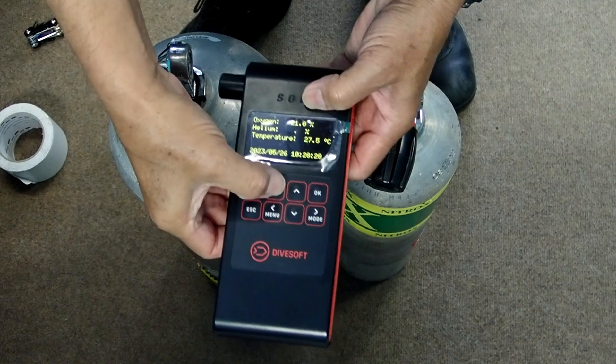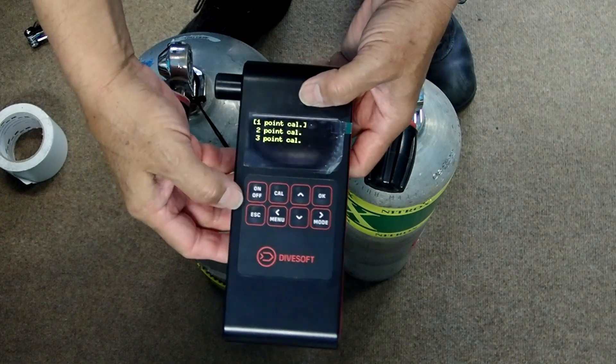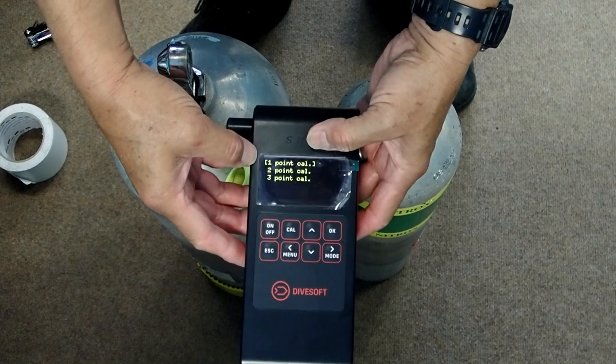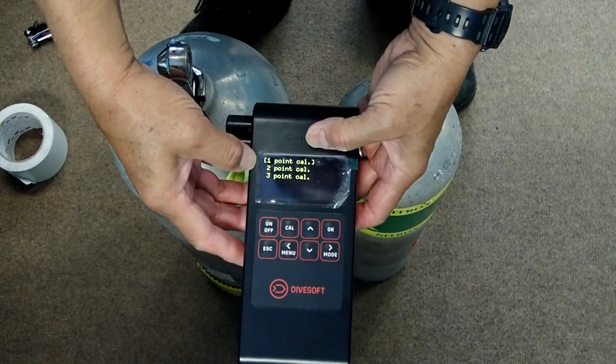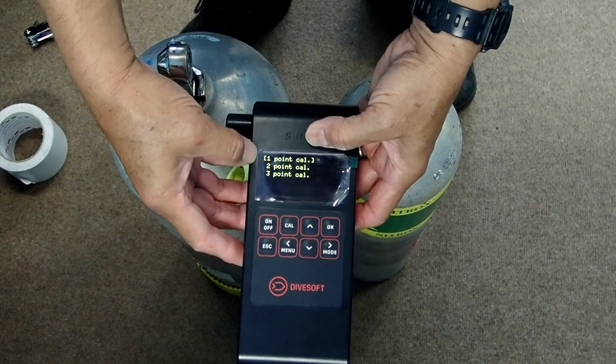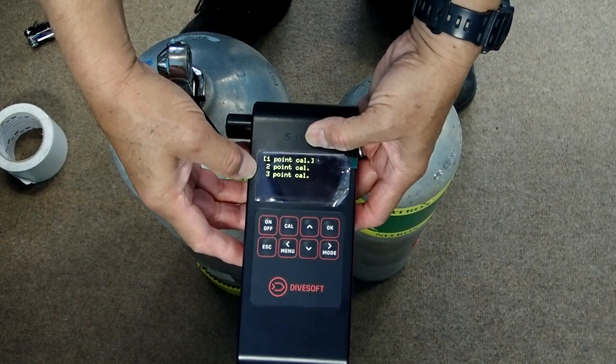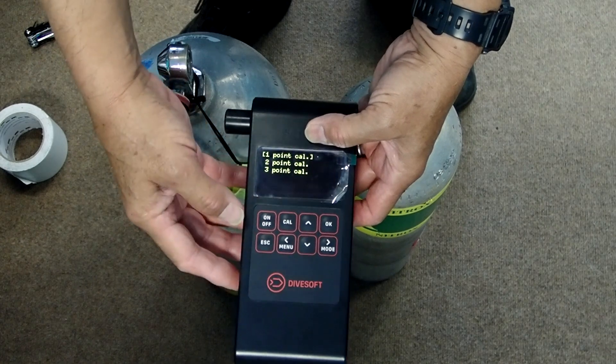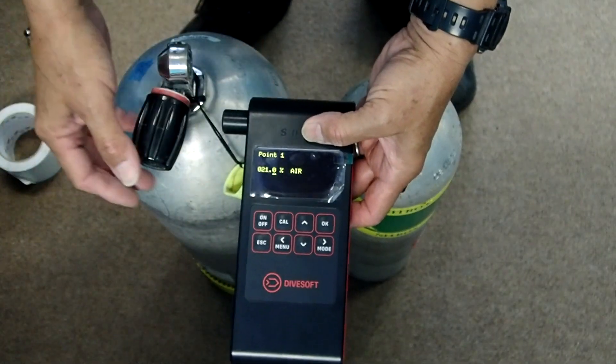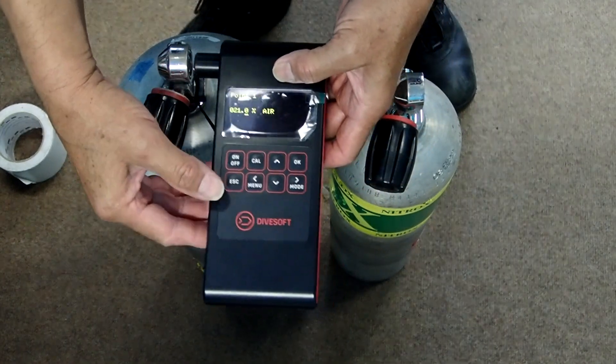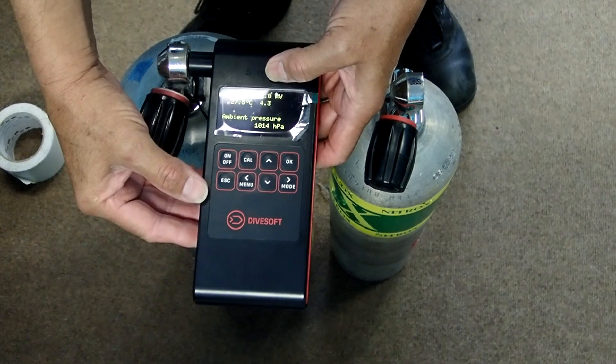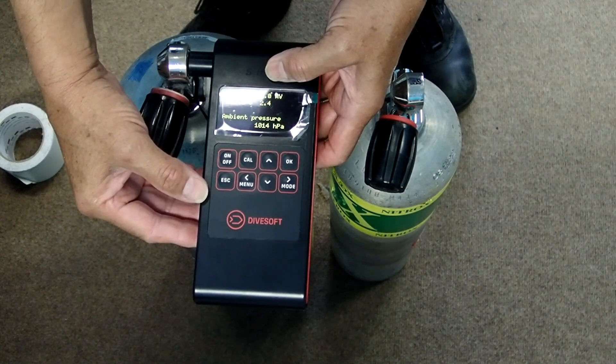We're going to calibrate the analyzer. This is a one-point calibration, which means we're calibrating on air. A two-point calibration would, for example, be analyzing both air and O2 and this would be more accurate. You could also do a three-point calibration. We're going to do the one-point calibration. It's set to one point and set to air. We're going to put this up to it and press OK.